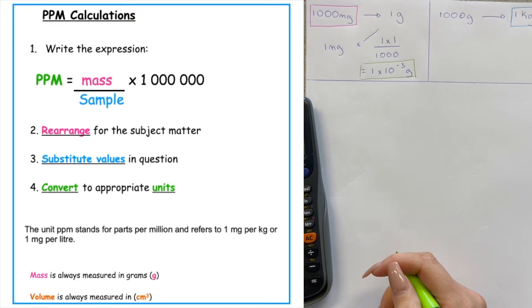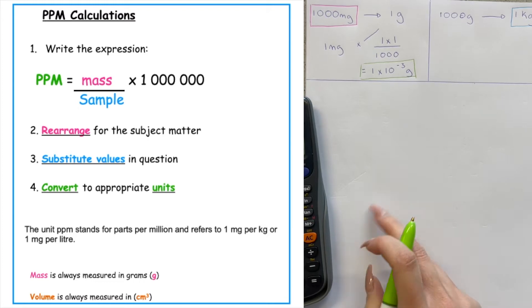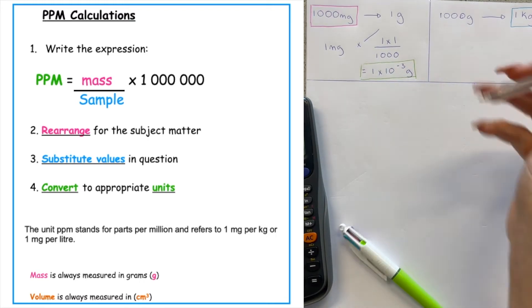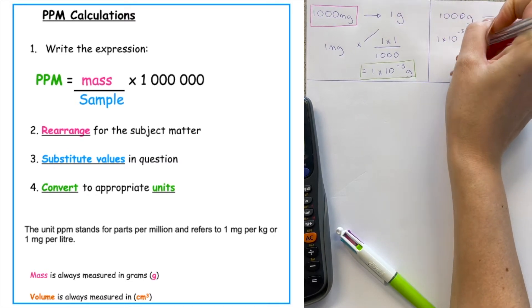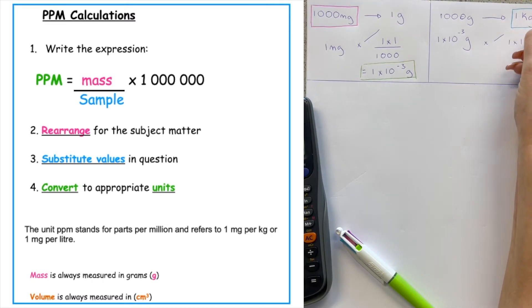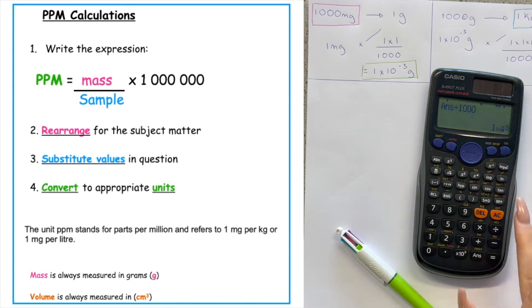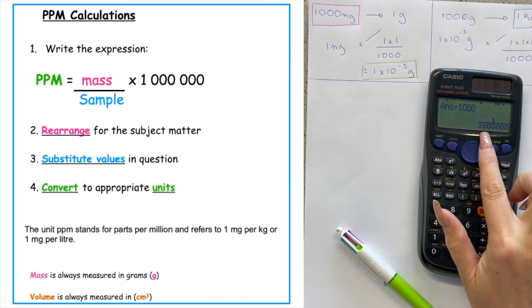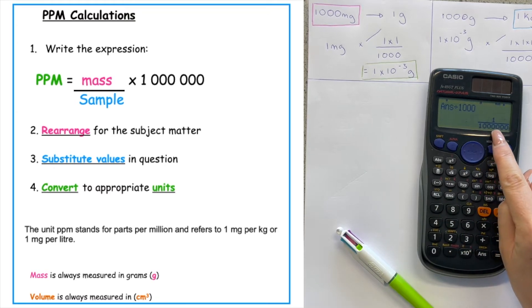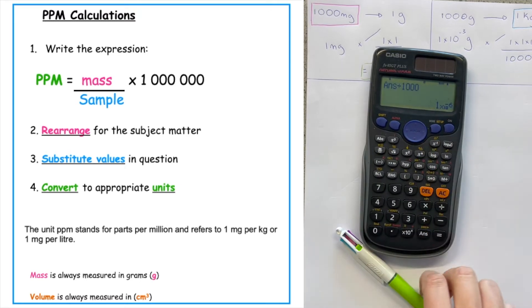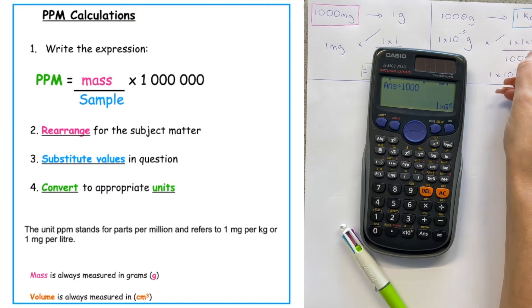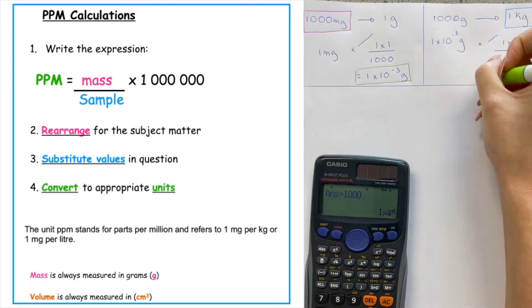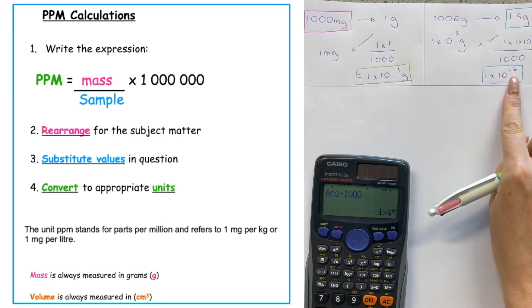But remember, it doesn't say one milligram per gram — it says one milligram per kilogram. So we take this unit and put it over here: one times ten to the minus three grams, and we cross multiply. One times one times ten to the minus three divided by one thousand, which gives us one times ten to the minus six — that's six zeros. So one milligram is one millionth of a kilogram, and hence why we multiply by a million.